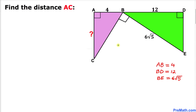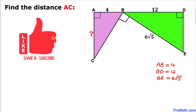Welcome to Pre-Math. In this video lesson we have green and purple right triangles that are perpendicular to each other. Line segment AB is 4 units, line segment BD is 12, and line segment BE is 6 times the square root of 5. We are going to find the distance AC.